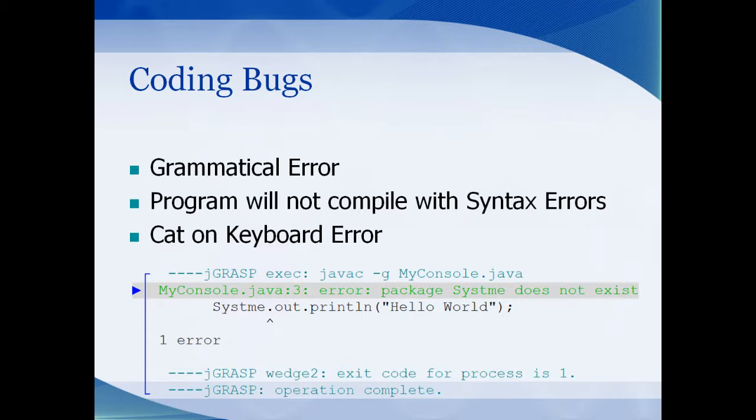A coding bug is usually a misspelling in your code. You want to check the case, check the spelling, check how you spelled it elsewhere. Your program is not going to compile if you have some sort of coding bug in it.